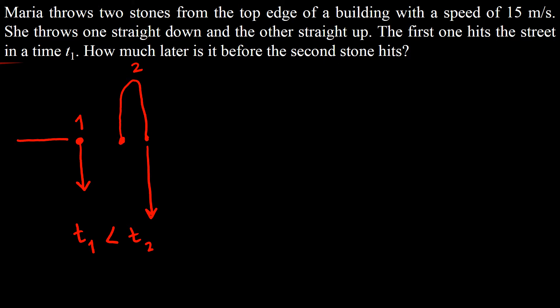Because the second stone has to go up first before it goes down. Both stones were released with the same speed — it's just that their velocities are different. For the first stone, the velocity is equal to negative 15 meters per second because it was thrown straight down. Whereas for the second stone, since it was thrown up, the velocity is equal to positive 15 meters per second.